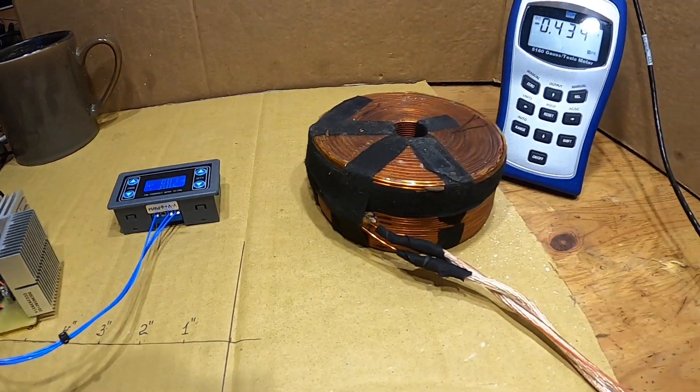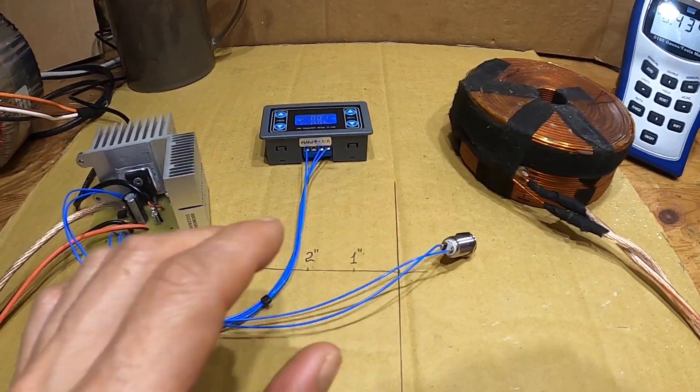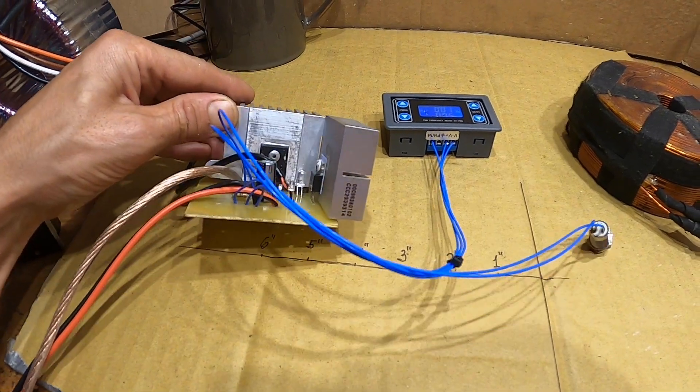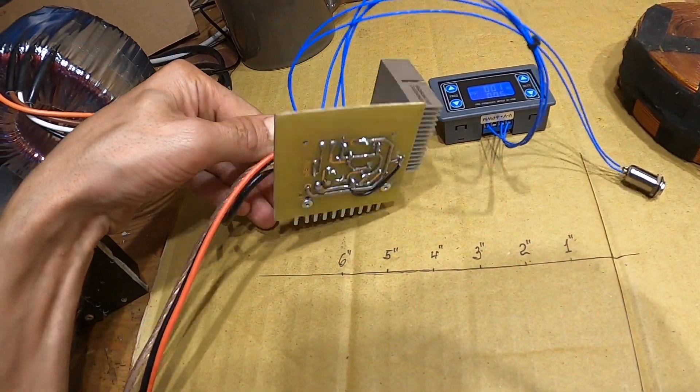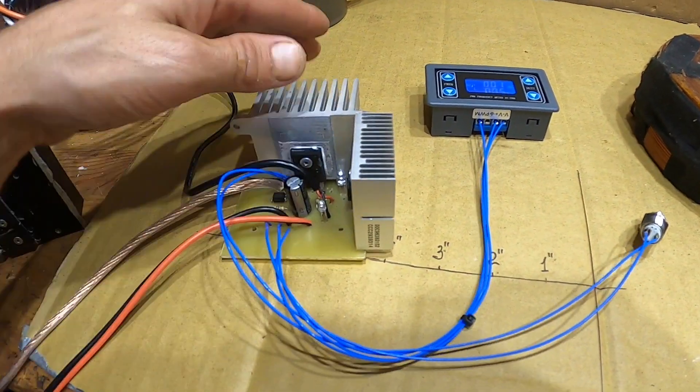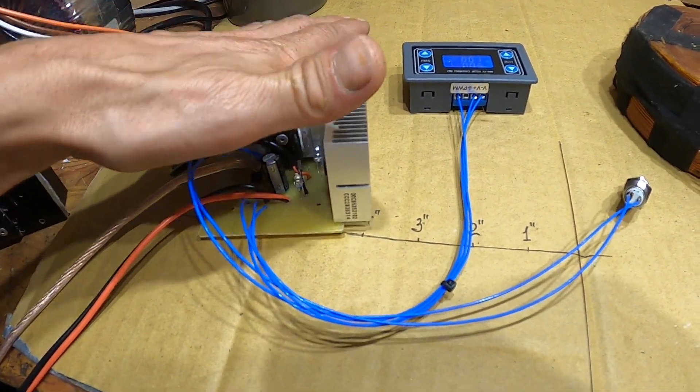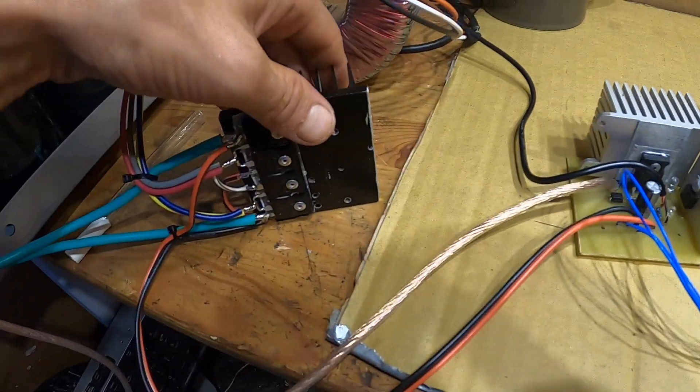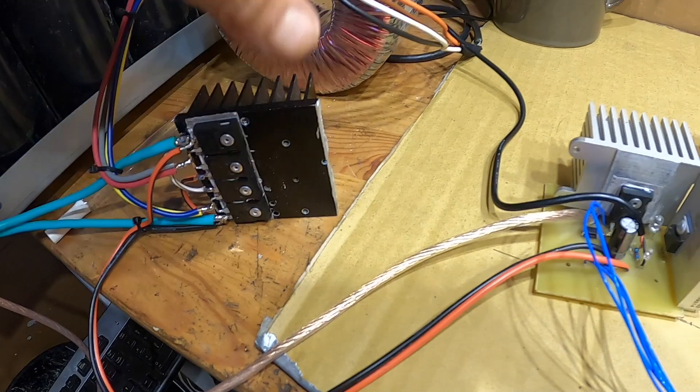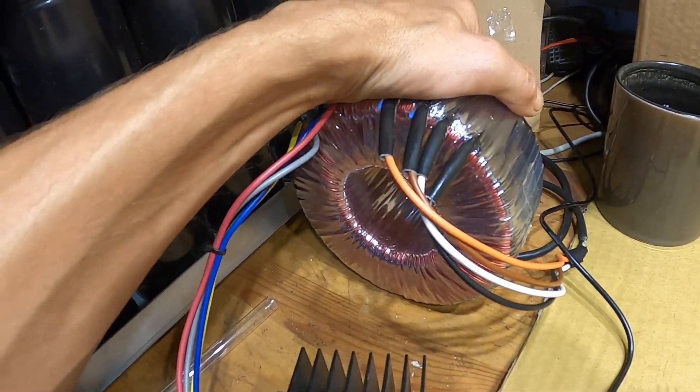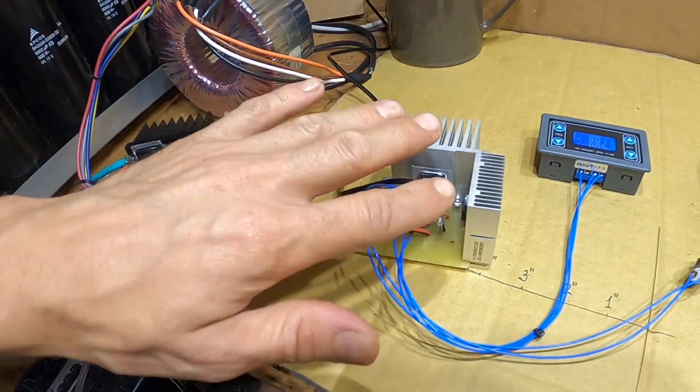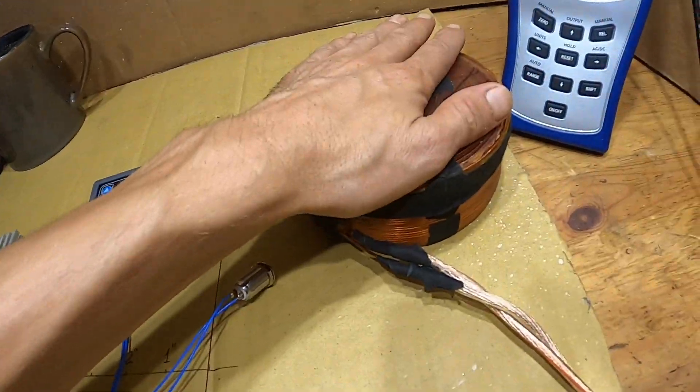So now you know roughly how much you're gonna get from this circuit and how it performs. Let me tell you, the heat sinks are cold, transformer is cold, and capacitors don't get hot. So everything stays cool except the coil. Coil is the only thing that heats up.